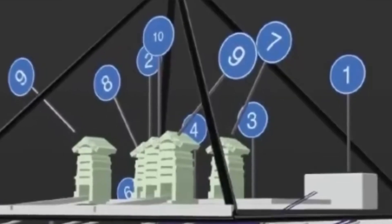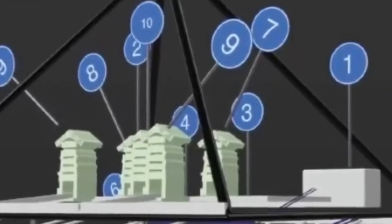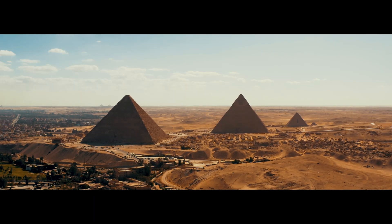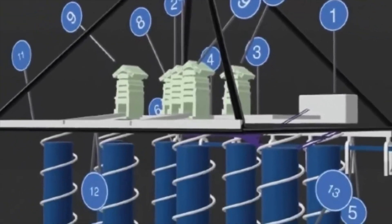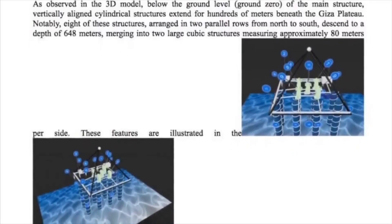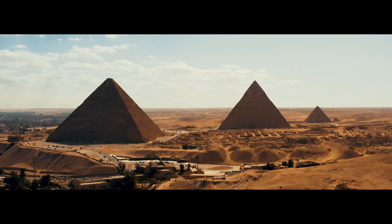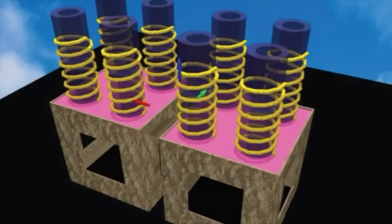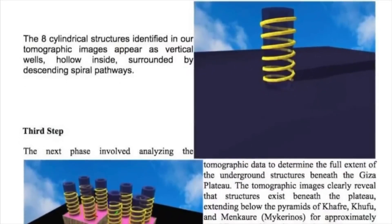But the most shocking discovery lies beneath the surface, below ground level. Radar tomography has identified vertical cylindrical structures extending for hundreds of meters beneath the pyramid. There are eight of these cylindrical wells arranged in two parallel rows, descending to an astonishing depth of 648 meters. Even more intriguing, at the base of these structures are two massive cubic formations, each measuring approximately 80 meters in diameter. The tomographic data suggests these are vertical wells with intricate spiral pathways. This design not only implies a functional purpose, but also a level of sophisticated engineering that completely blows the dynastic Egyptian model out of the water.